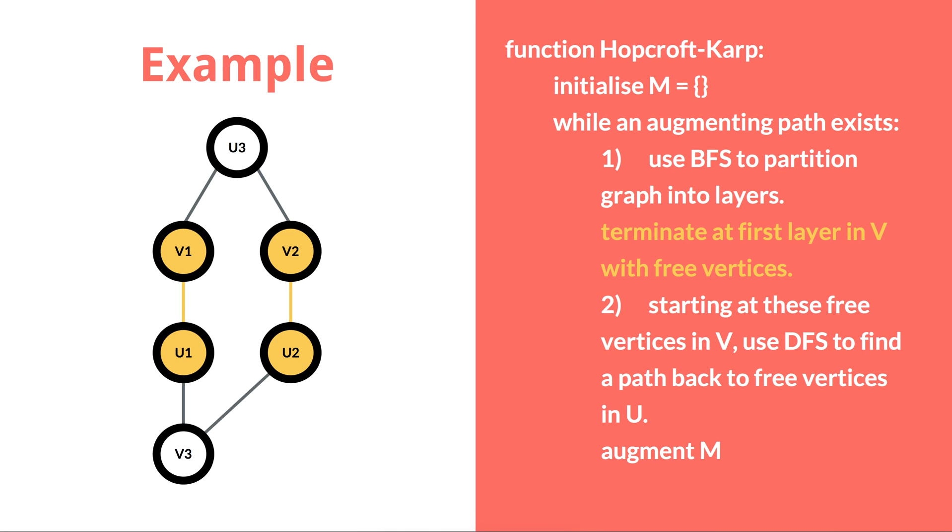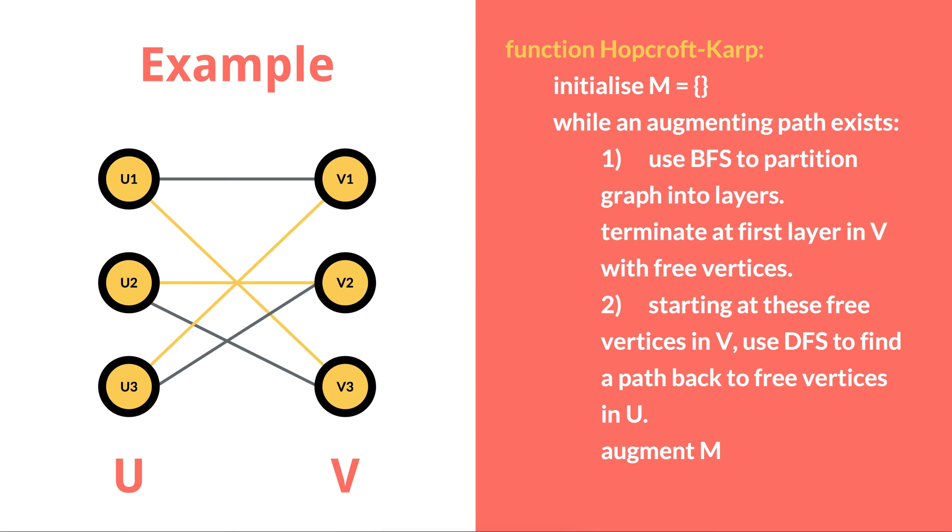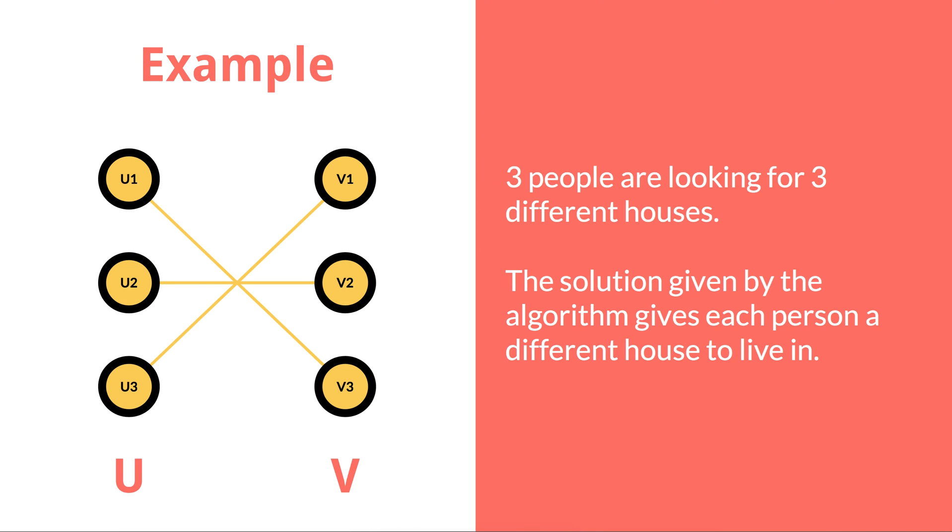A path is then found from the node V3 up to U3 as before, and this path is used to augment M. This is the maximum cardinality matching for this graph, and everyone is happy.